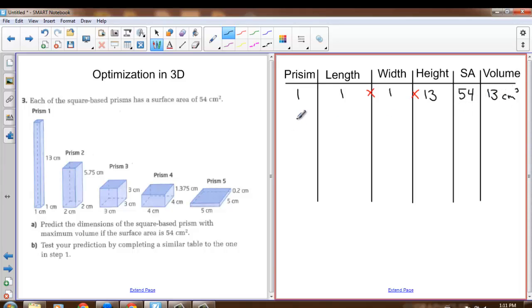So let's go on to our next prism, prism number 2. Prism number 2 has a length and a width of 2, and a height of 5.75. Again, the surface area stays the same, and our volume 2 times 2 times 5.75 increases to 23 centimeters cubed.